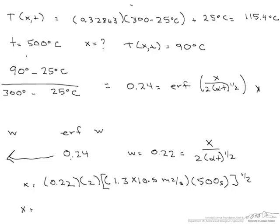So our X equals 0.035 meters, or 35 millimeters, which makes sense because if it is a temperature at 90 degrees C, it shouldn't be as far down as where we would find a temperature of 115 degrees C.